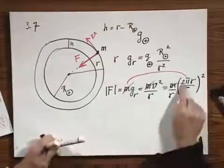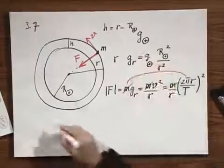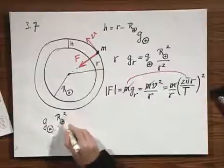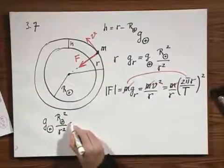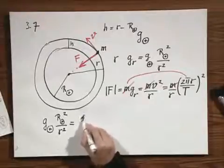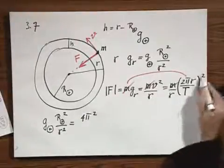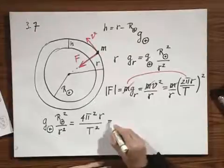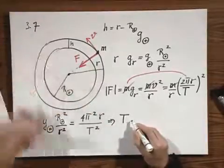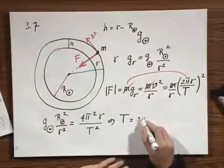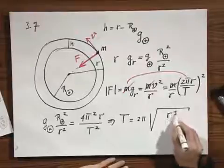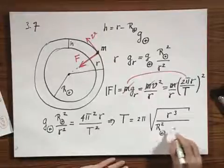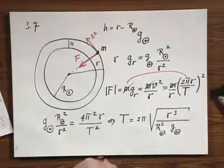So gr equals this quantity, but I can replace this gr by this. And so I'm going to get g measured at the surface of the Earth times the radius of the Earth squared divided by r squared. That now equals 4 pi squared. This r eats up one r here, so I end up with only one r divided by t squared. And out pops the orbital period of this satellite, which equals 2 pi times the square root of r cubed divided by the radius of the Earth squared times the gravitational acceleration as measured at the Earth.